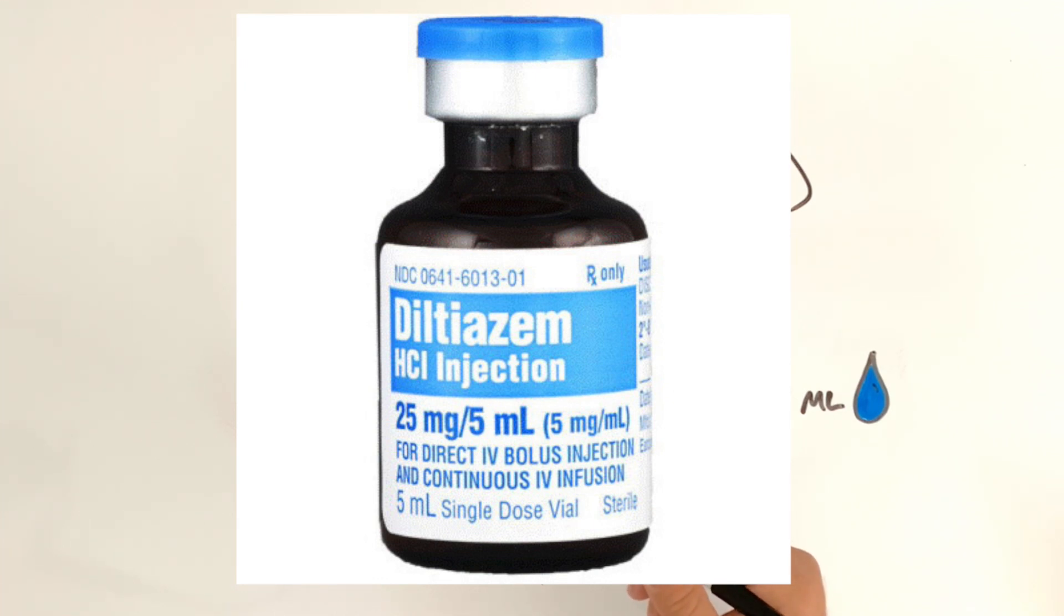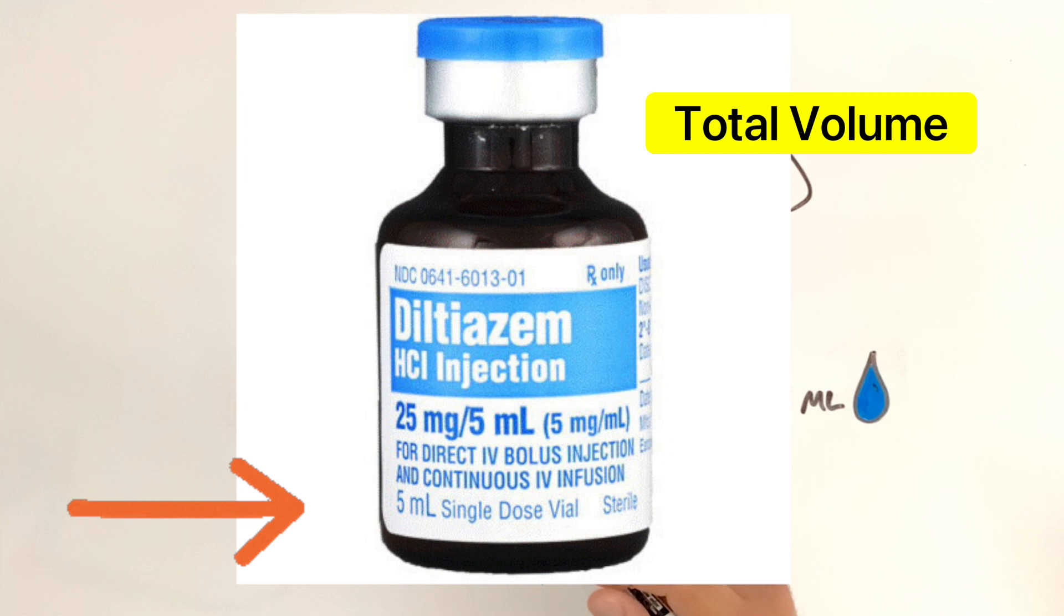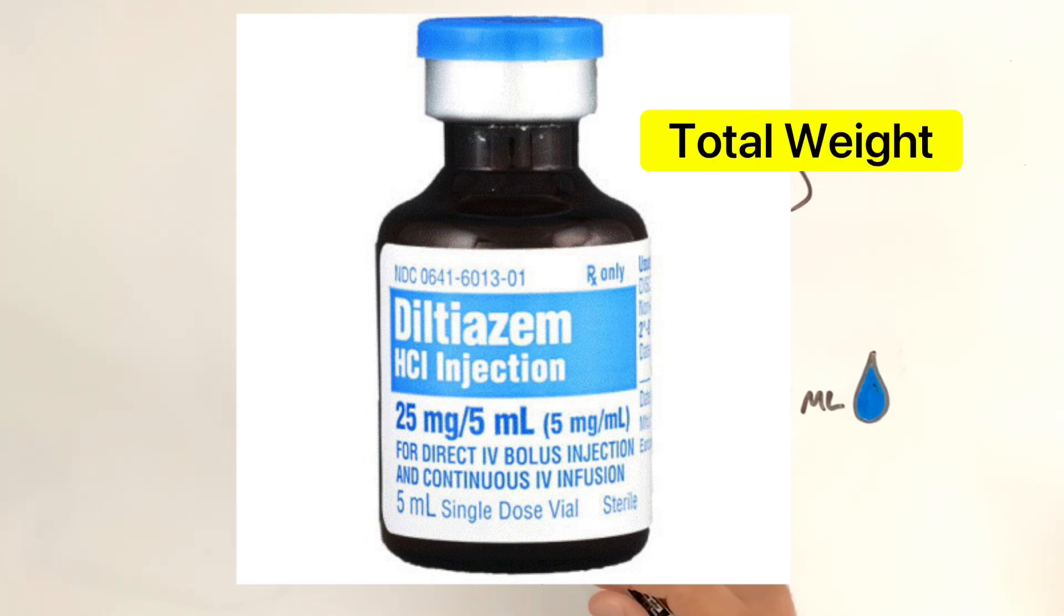The first thing you want to look at is the total volume. This is going to be the entirety of the liquid in that vial or that bag or that pre-filled syringe. So in our Cardizem, our total volume is 5 mLs. We're also going to look at the total weight. The total weight is the total amount of drug suspended in that liquid, which is 25 milligrams.